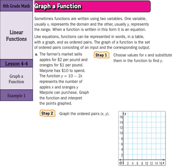So, in our example, the farmer's market sells apples for $2 a pound and oranges for $1 per pound. Marjorie has $10 to spend. The function y = 10 - 2x represents the number of apples x and oranges y Marjorie can purchase. So, graph the function and interpret the points graphed.